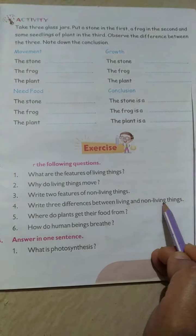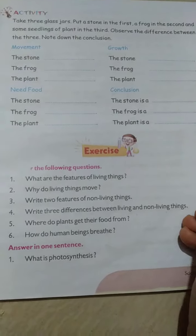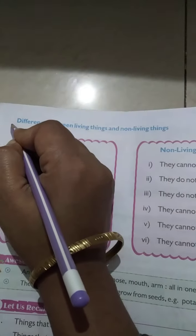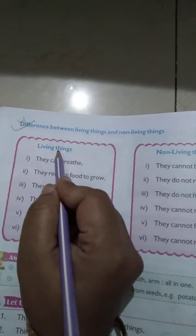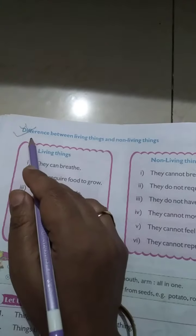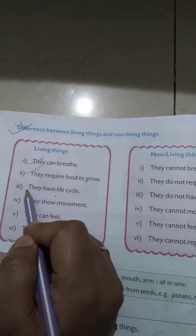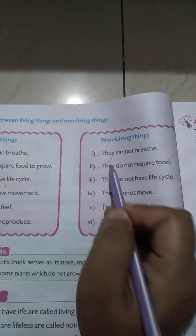Question number 4. Write three differences between living and non-living things. Answer number 4: Living things can breathe, they require food to grow, and they have a life cycle. Non-living things cannot breathe, they do not require food, and they do not have a life cycle.